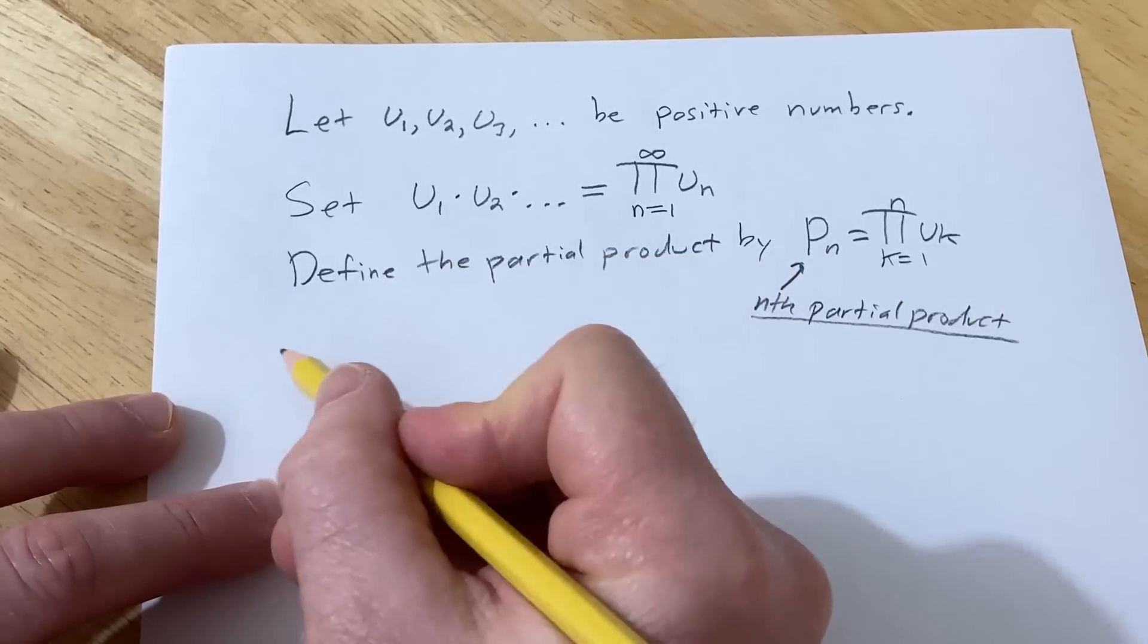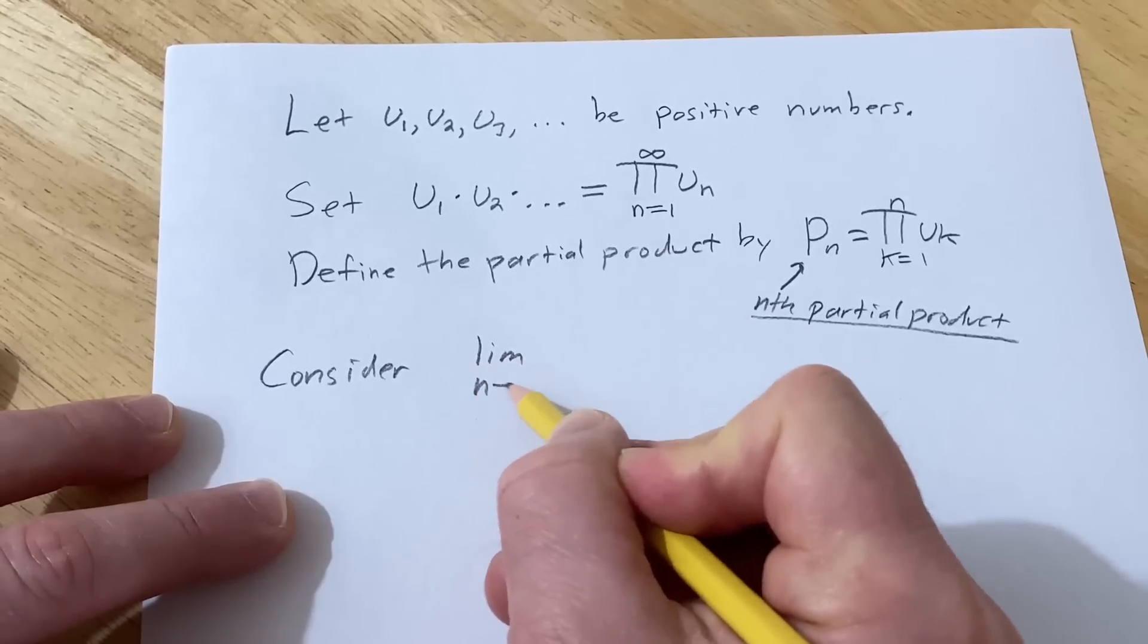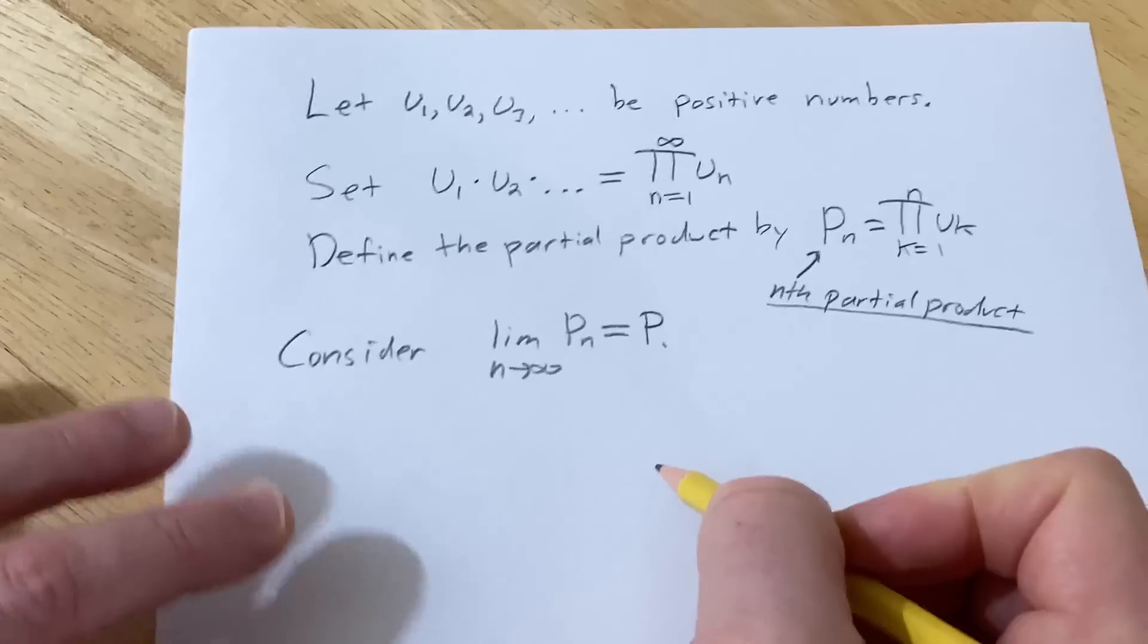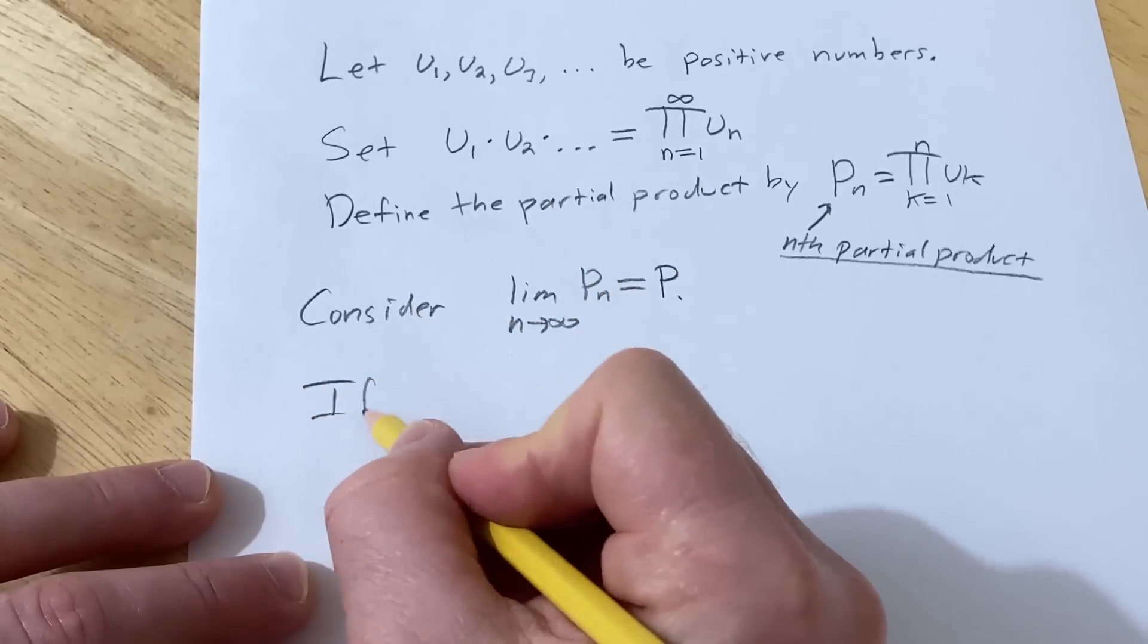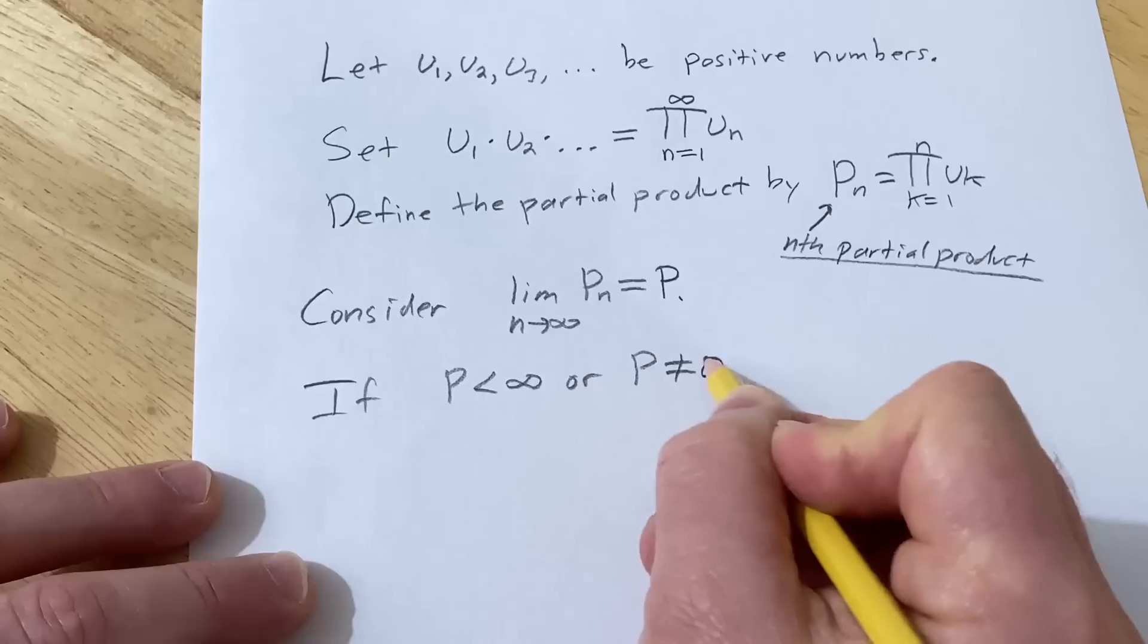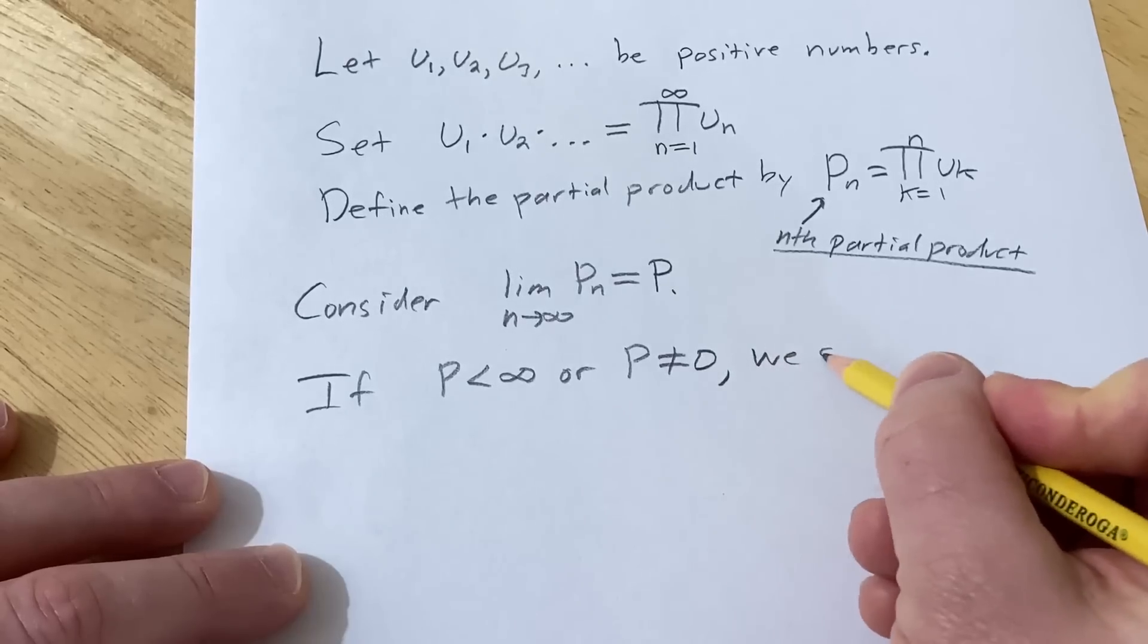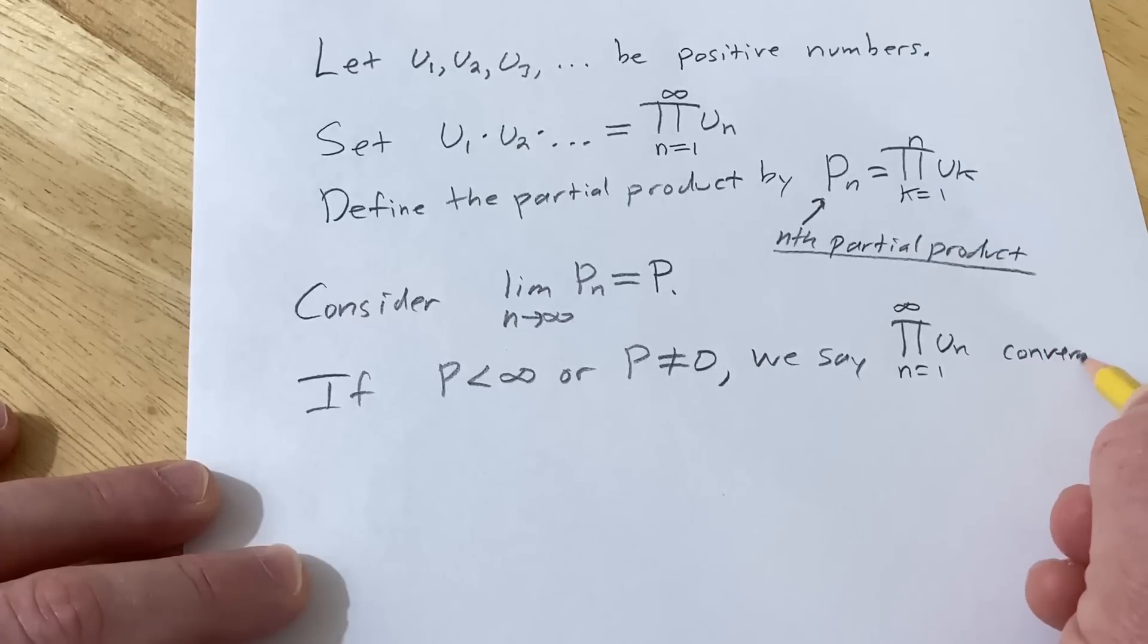And so now let's consider the limit of this. So consider limit as n approaches infinity of p_n. And I'm just gonna go ahead and set it equal to p. So if p is finite or not 0, so if p is less than infinity or p is not equal to 0 we're gonna say that this infinite product converges. So we say that this infinite product converges. Otherwise it diverges.